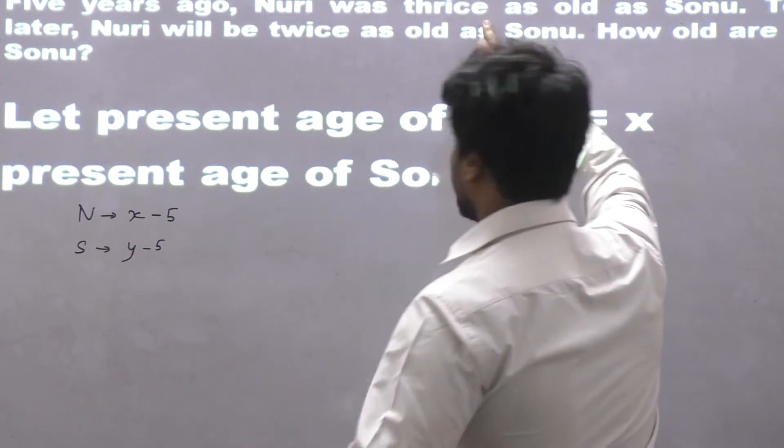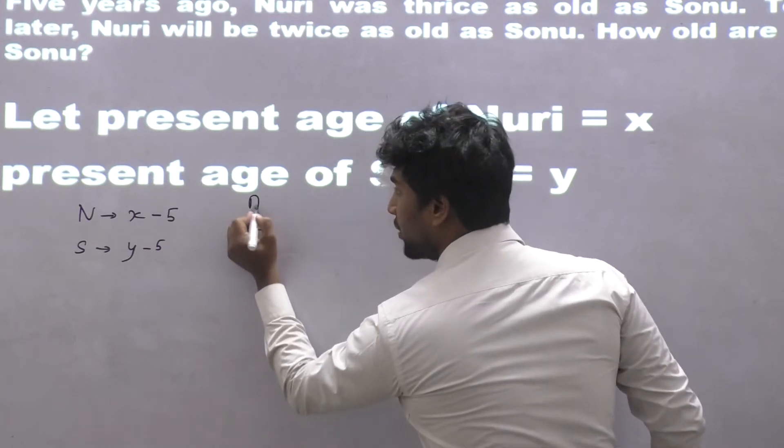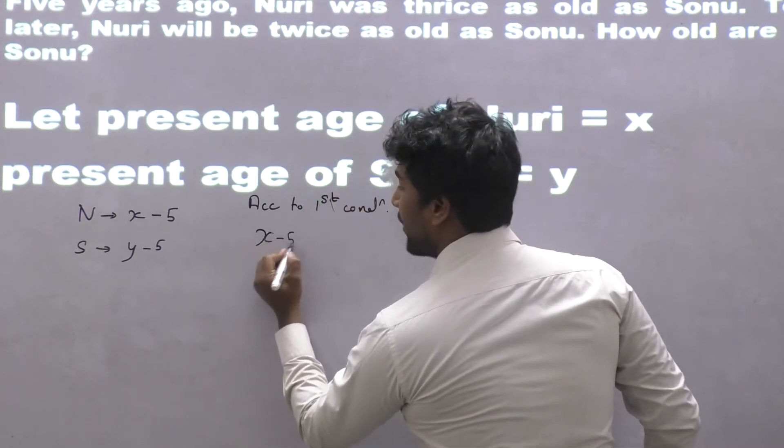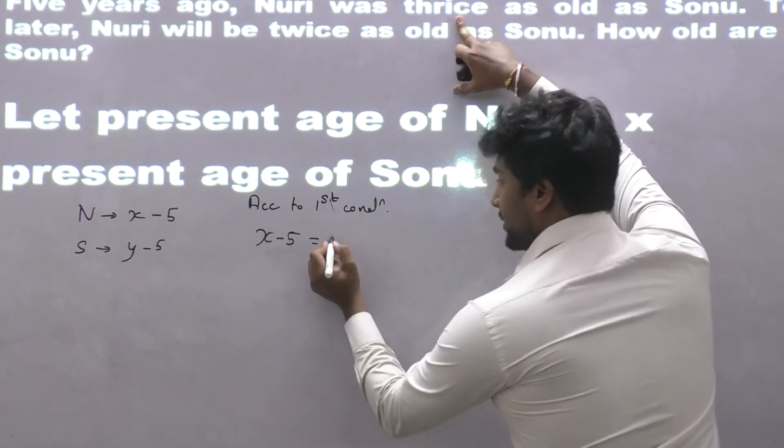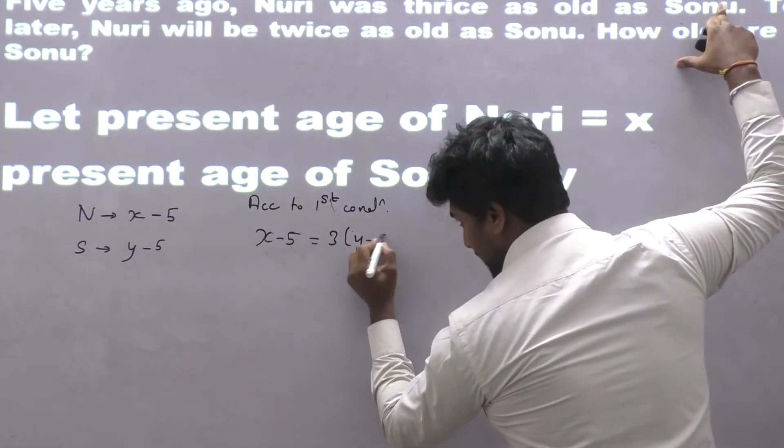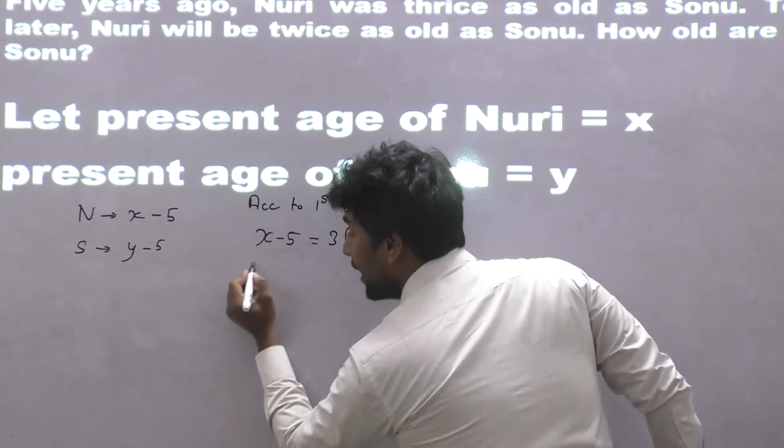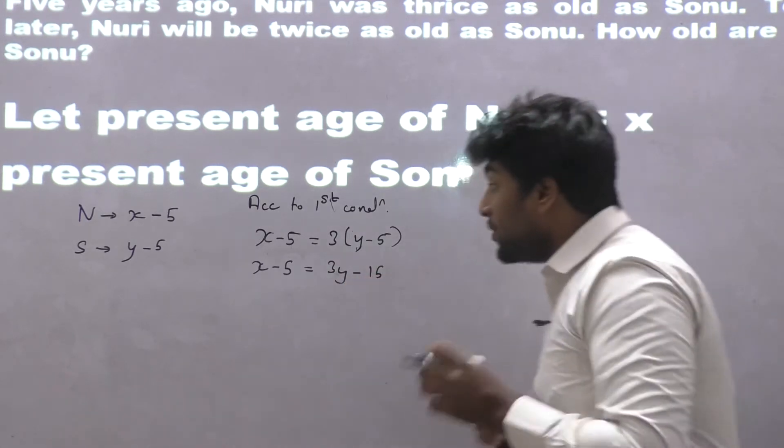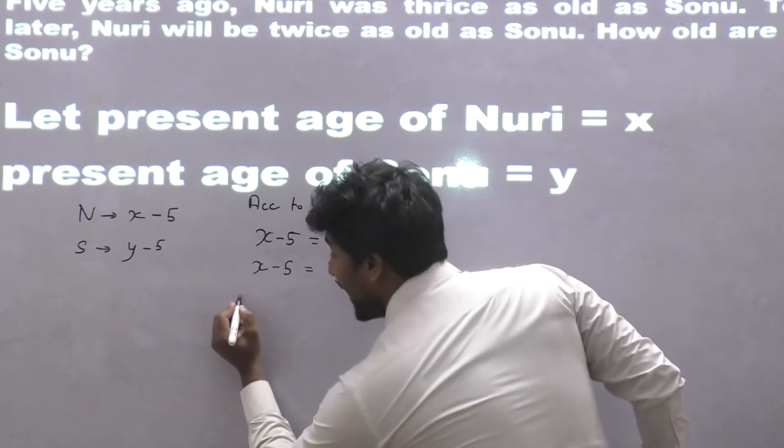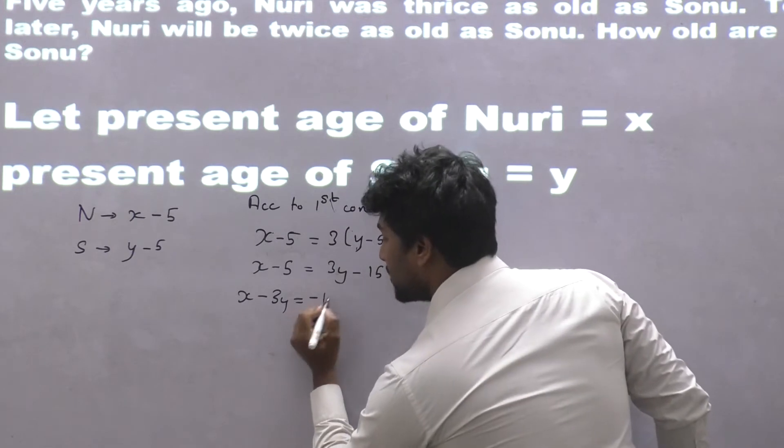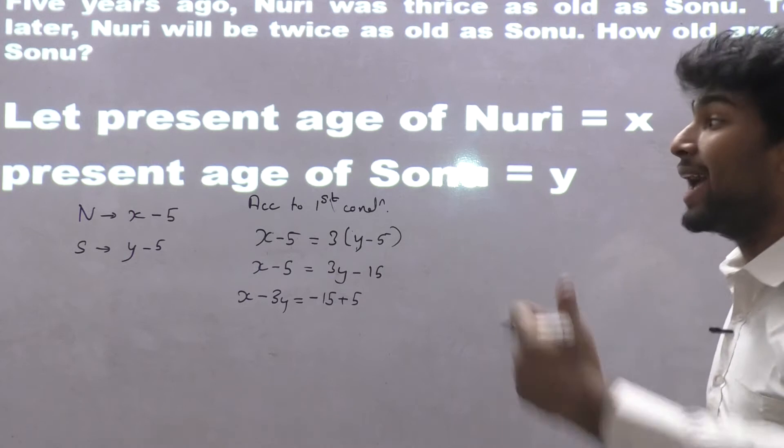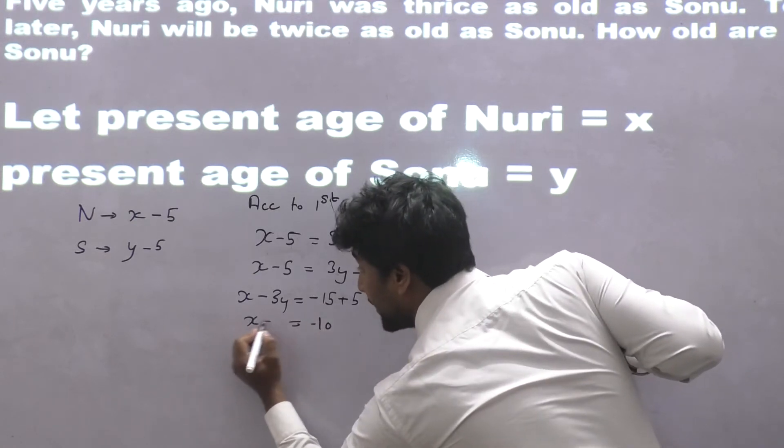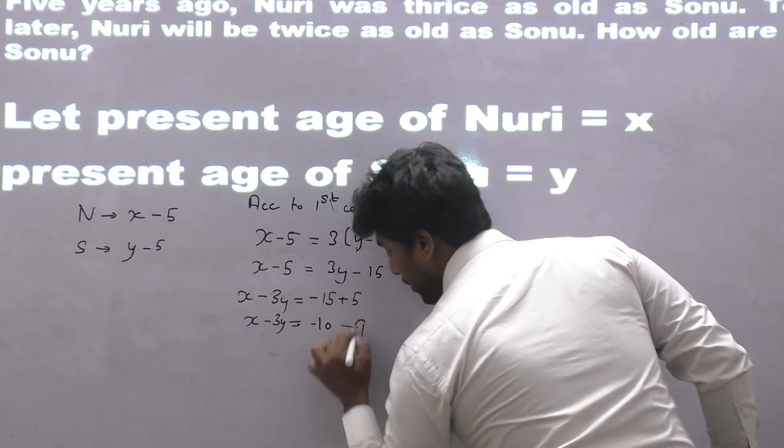Now, Nuri was thrice as old. According to the first given condition, Nuri, that is x minus 5, was equals to thrice, 3 into y minus 5. So x minus 5 equals 3y minus 15. Now we will take variables on one side and constants on the other side. So x minus 3y equals minus 10. Marking this as equation number 1.